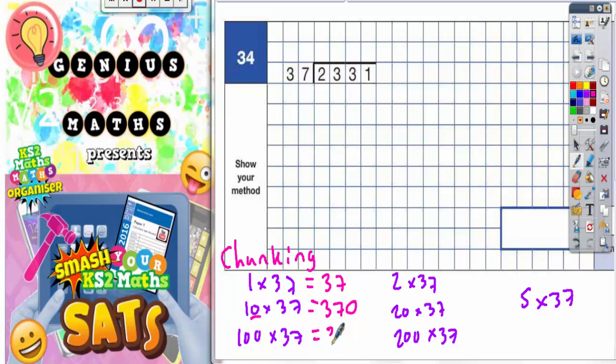2 times 37 is 74. 20 times 37 is 74 with one zero on the end, so 740. And 200 times 37 is 74 with two zeros on the end, so 7400.